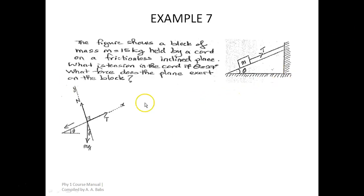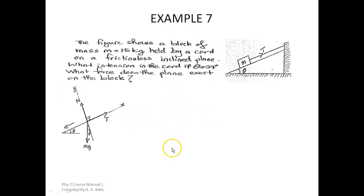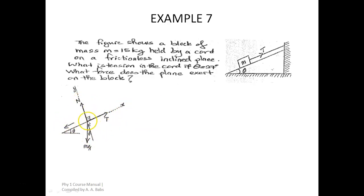Let's analyze this problem in an xy plane. Because we are on an inclined surface, our xy axis is tilted. Normally the x axis is horizontal and y is vertical, but here the x axis is inclined at theta which is 27 degrees. The mass is kept at the origin, and the weight of the mass is drawn vertically downward.